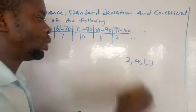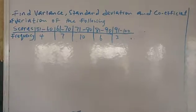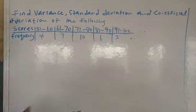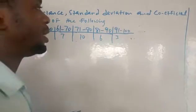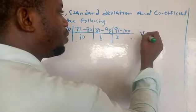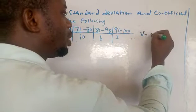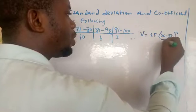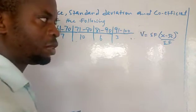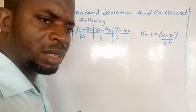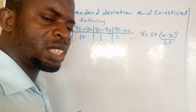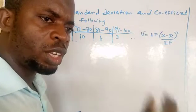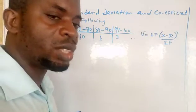Having understood that, let's start. We are going to find variance. The formula for variance of grouped data is: summation of f(x minus mean) squared, over summation of f. That is variance. One good thing is that when you get your variance, you can simply get your standard deviation — just find the square root of your variance.